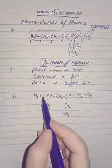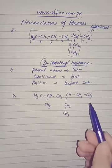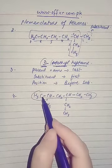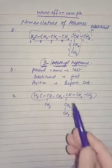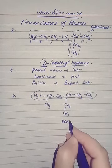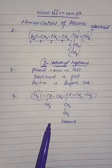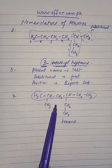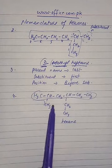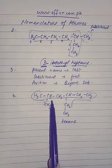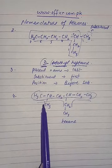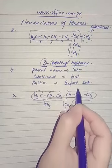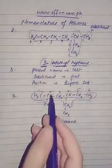This is the longest chain according to rule one: 1, 2, 3, 4, 5, 6 — this will be the longest chain. It means our compound will be a six-carbon chain, so it will be a hexane. Now we will find the end closest to the substituents. This is the shortest distance, so we will start numbering from here: 1, 2, 3, 4, 5, 6.